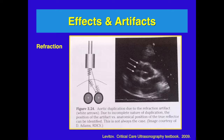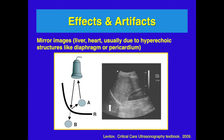Refraction can be seen in many areas — here you see aortic duplication due to a refraction artifact, where the white arrows show similar images of the aorta. Mirror images of the liver are also shown — these occur usually due to hyperechoic structures like the diaphragm or pericardium. One way to get rid of mirror images is to move your probe to different locations, and usually the artifact disappears.